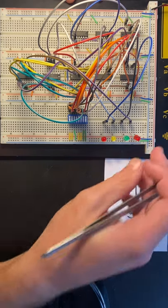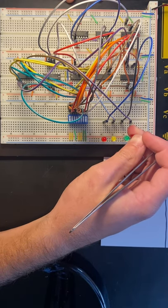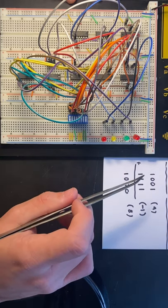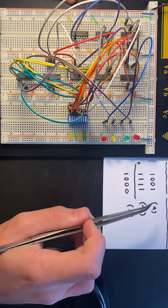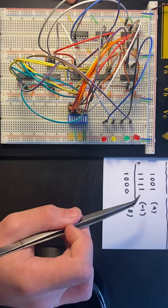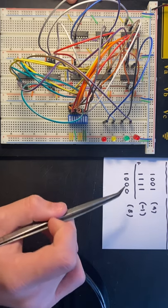I'm going to start by demonstrating a few operations that we can do. For example, here on the right we have 1001, which is nine, plus negative one, which is 1111. That should give us 1000, which is eight.